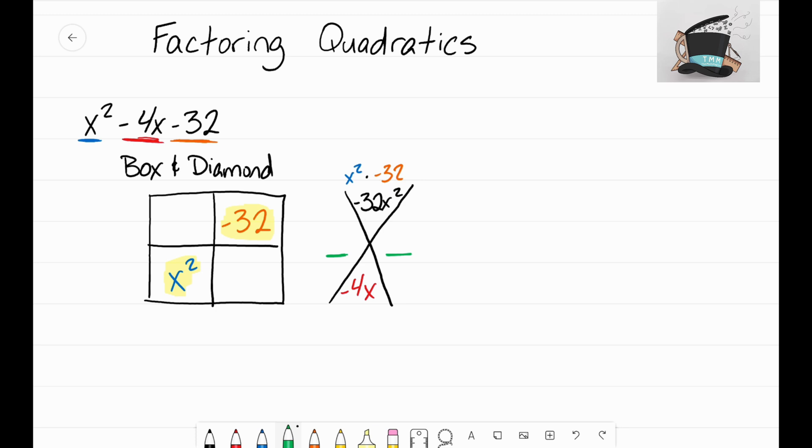So once you look through your factor chart, hopefully we find out that what multiplies to negative 32—one of the set of factors is negative 8x and positive 4x. These two terms here, they multiply to negative 32x², but they also add to negative 4x. And this is just on a factor chart.